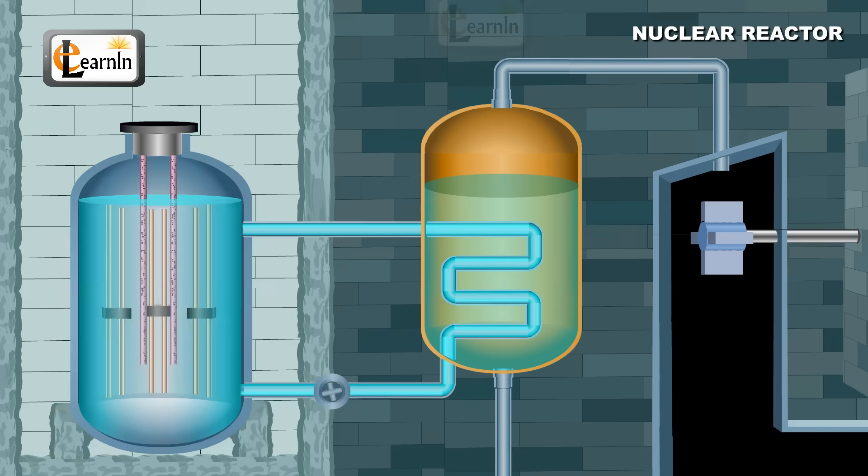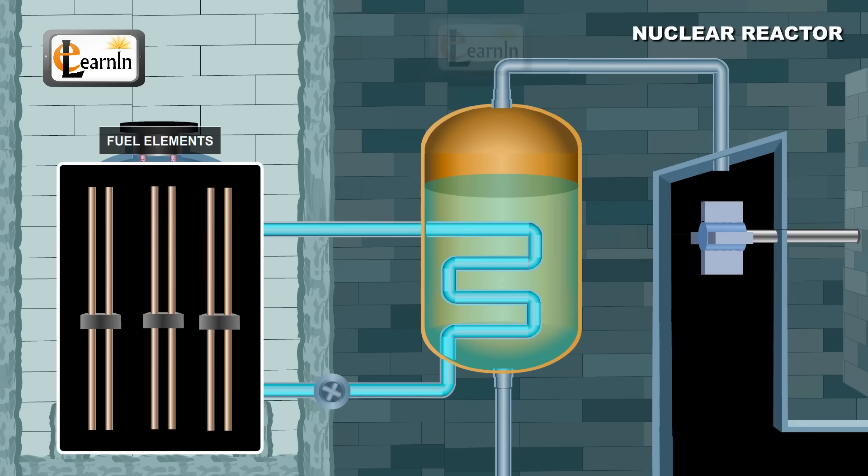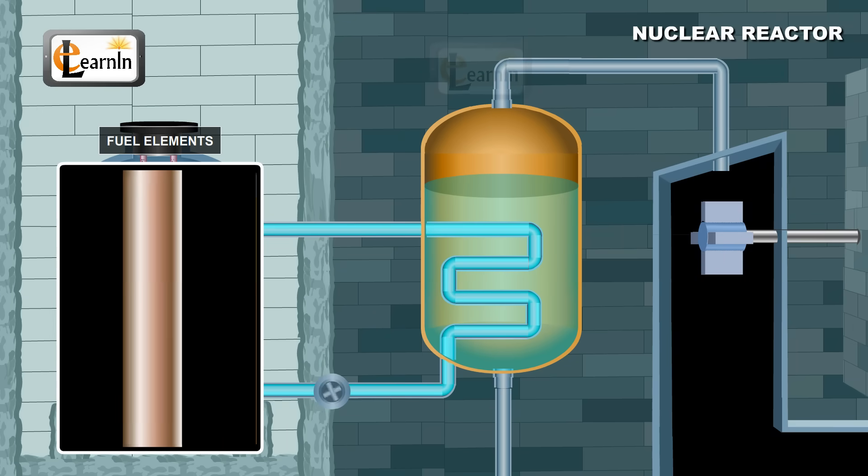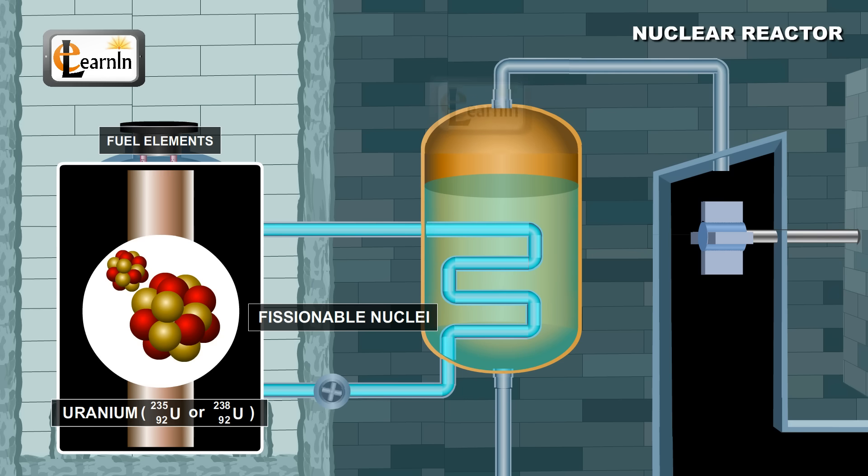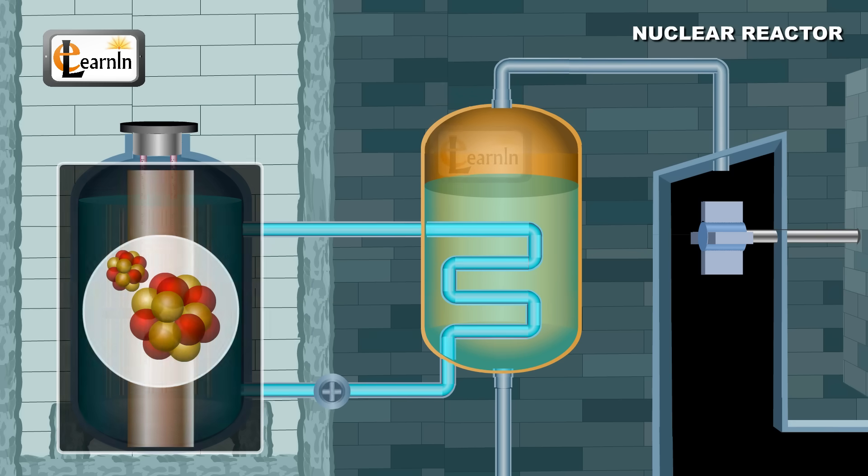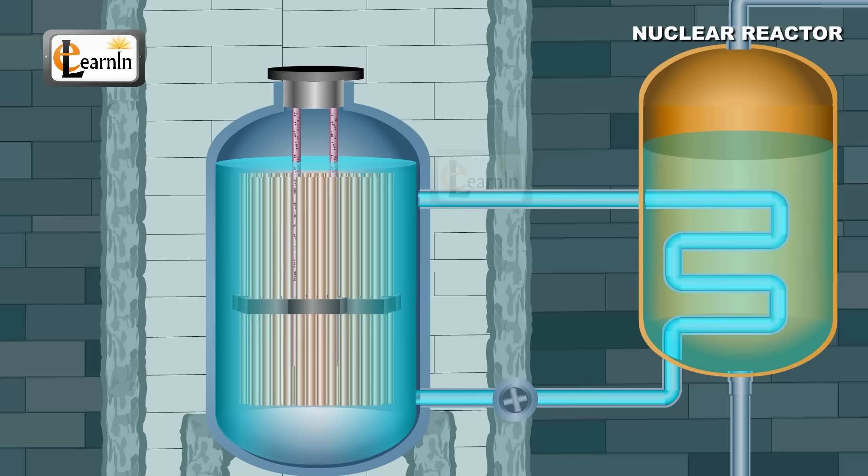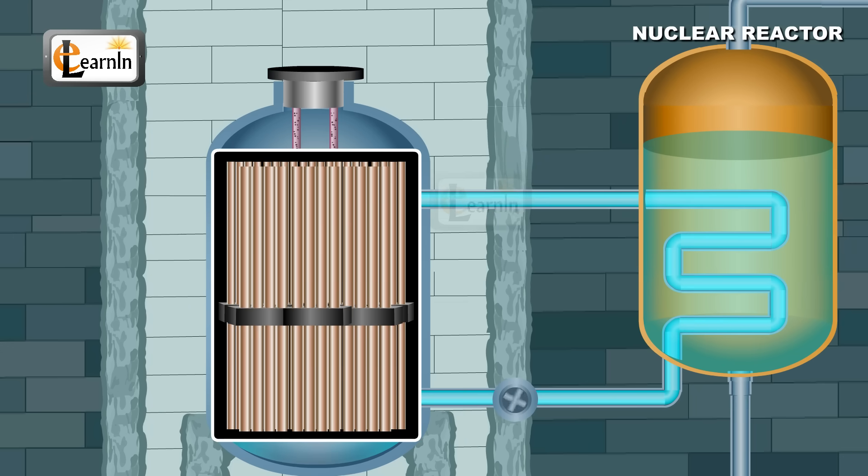Fuel elements come usually in the shape of thin rods of about one centimeter in diameter and contain fissionable nuclei like uranium-235 or uranium-238. These rods vary in number according to the size of the reactor. In large power reactors, thousands of fuel elements are placed close to each other.